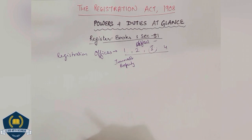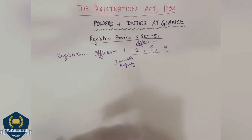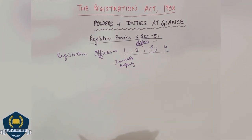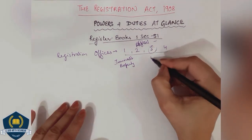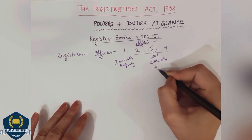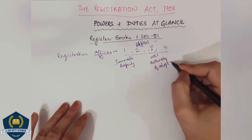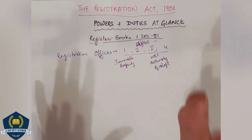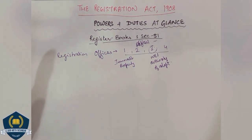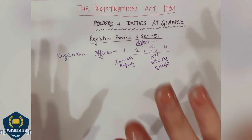Then comes book number 3. Book number 3 contains the register of wills and authorities to adopt. I have made 2-3 sessions on this basic section — go and watch them. In this book we write about wills or authorities to adopt, and all documents related to them. So as a law student, if you want to register your will, you know it will be in book number 3. If you want to open or retrieve someone's will, open book number 3.